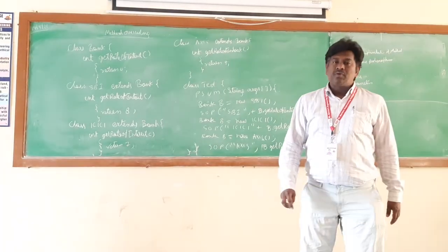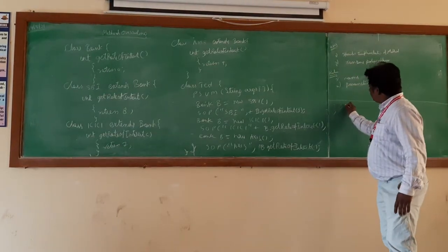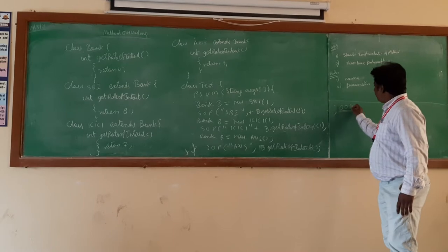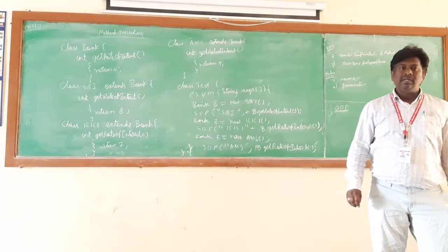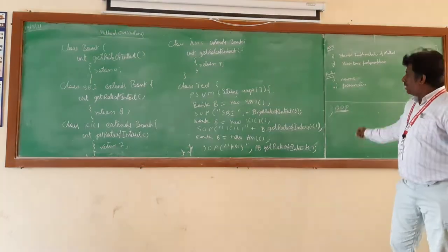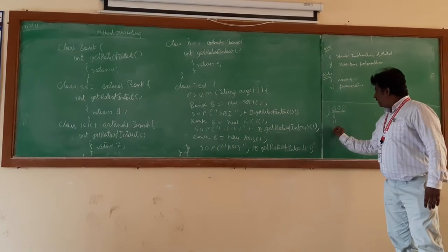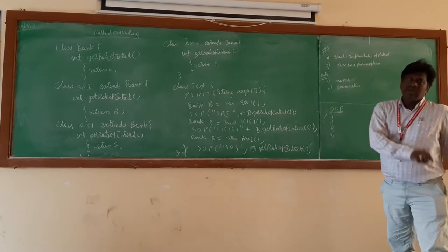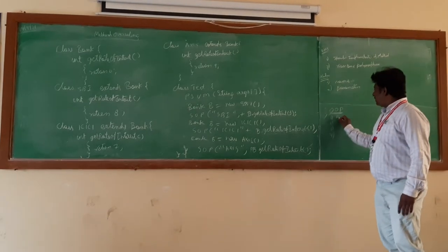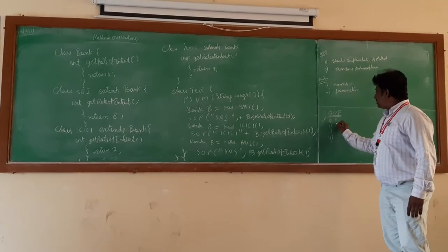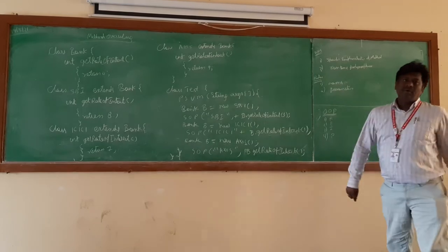It has come from the concept of OOPs — object-oriented programming language. Any programming language is called an object-oriented programming language when it has four characteristics. What are those four characteristics? Abstraction, encapsulation, inheritance, and polymorphism.